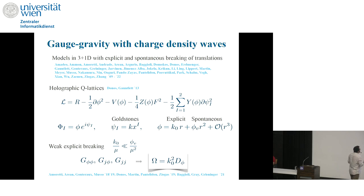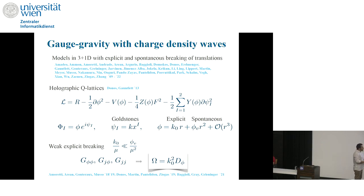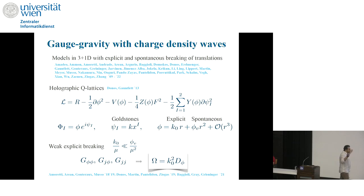You can model these systems in a bottom-up approach using holographic Q-lattices based on 3+1 dimensional AdS gravity coupled to a gauge field and a number of scalars in complex form, with phases chosen to be linear in the spatial directions. Whenever you have a non-trivial amplitude, this corresponds to a spontaneous or explicit breaking of translation symmetry on the boundary. What these authors studied was the weak explicit breaking limit, corresponding to weak disorder. In this limit, you can compute correlation functions of the pseudo-Goldstone boson and the charge. From the Kubo formulas, you find this curious relationship between the relaxation rate and the diffusion constant, with the proportionality constant being just the mass squared of the pseudo-Goldstone. This remained a curious holographic relation until recently.